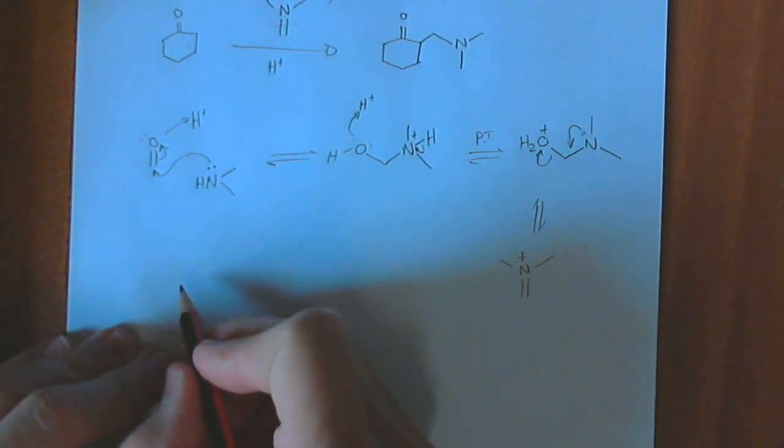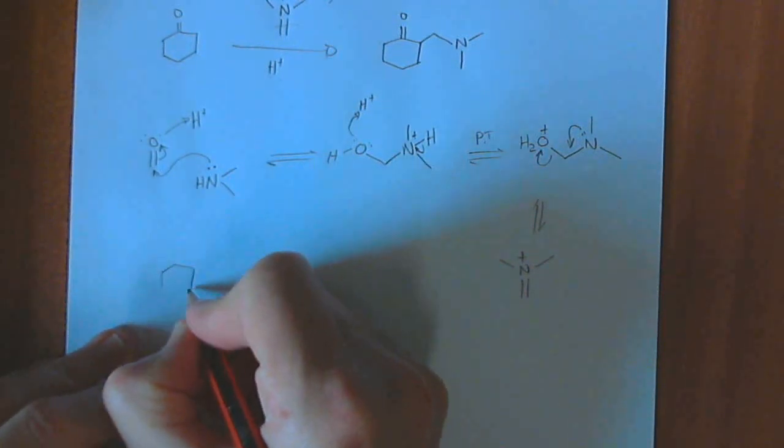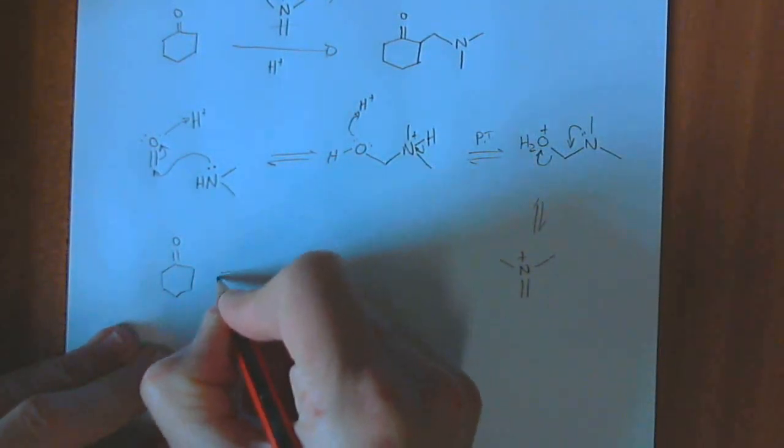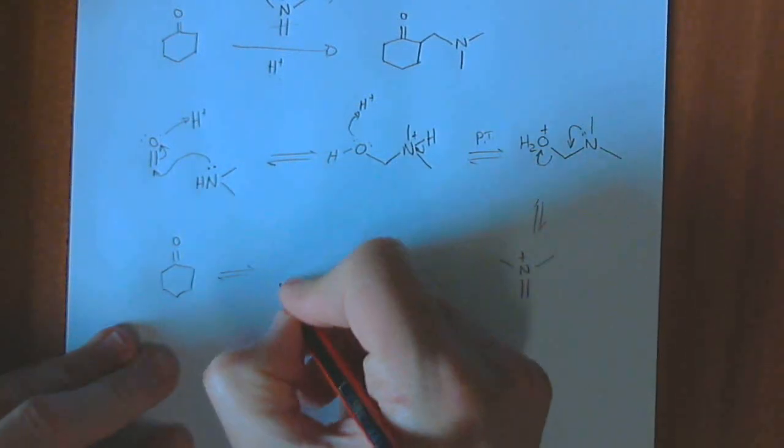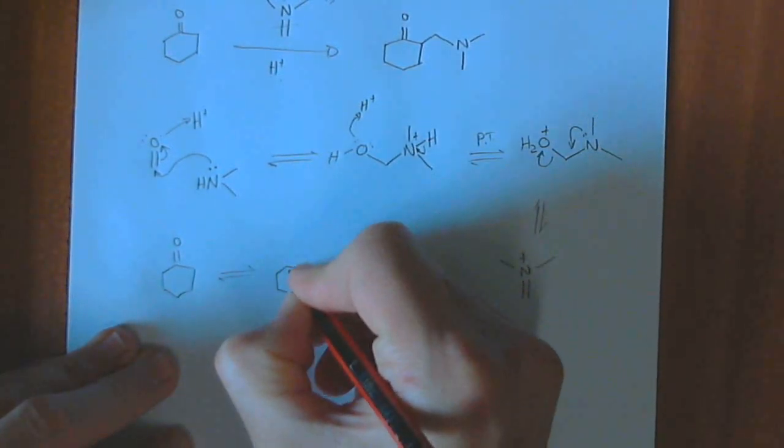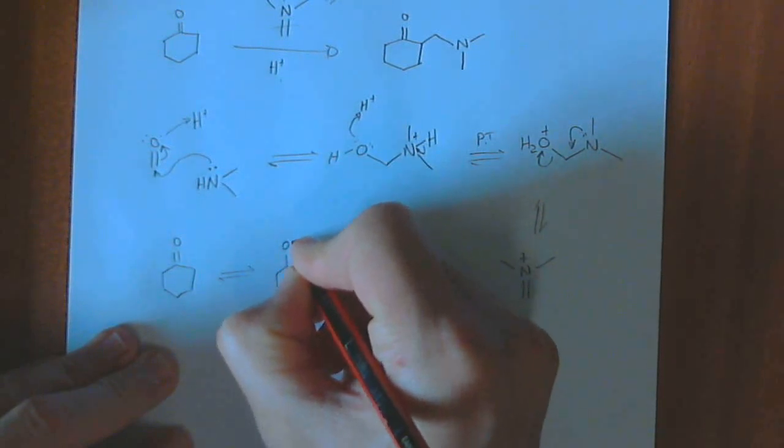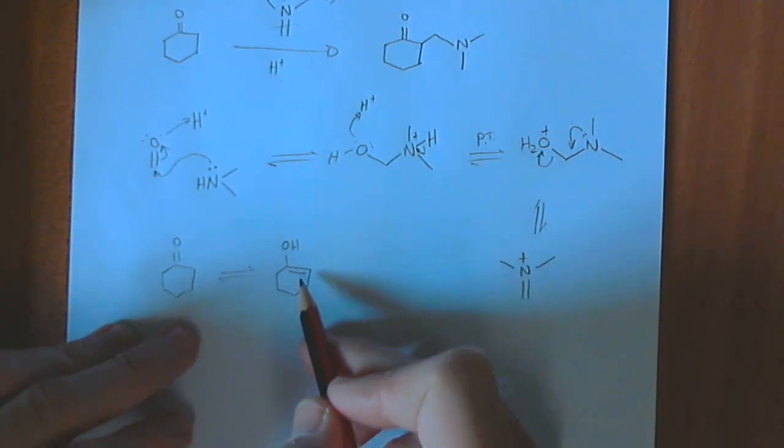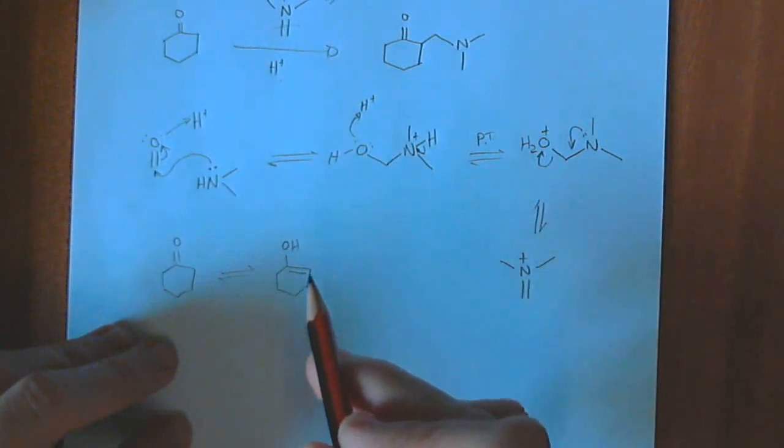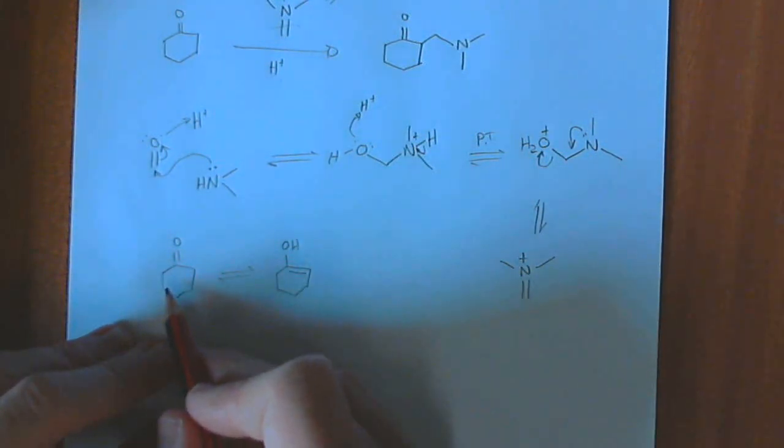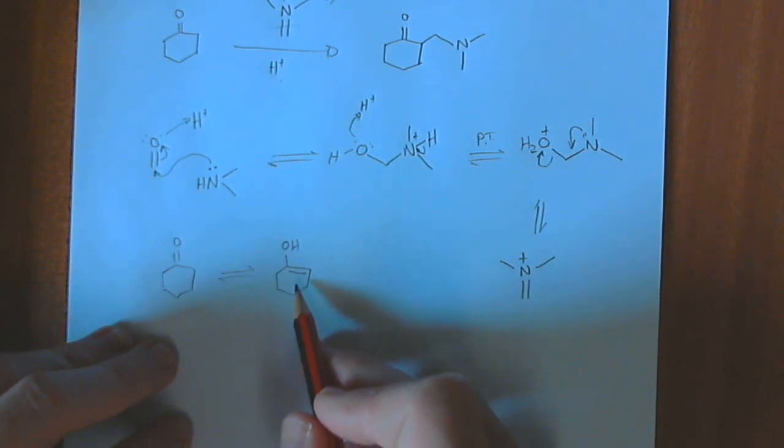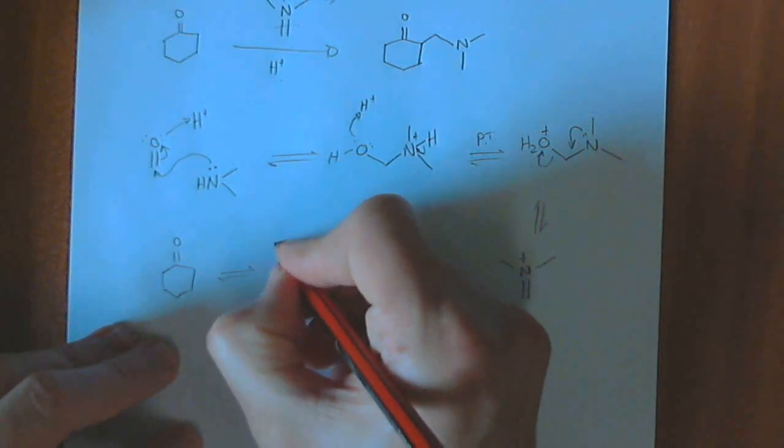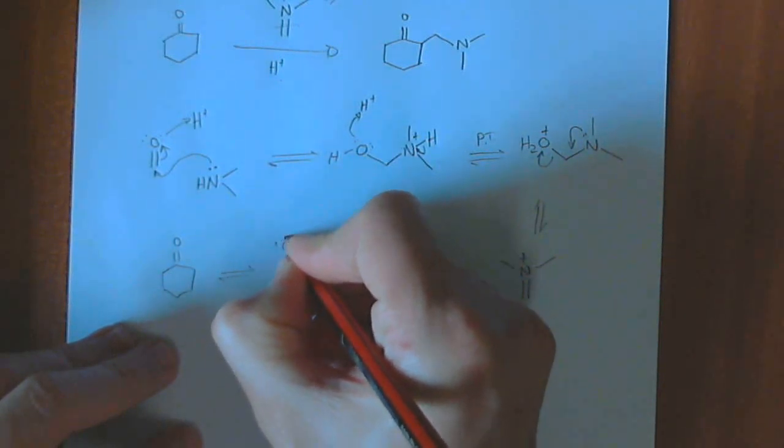At the same time, under acid conditions, we get our ketone. By tautomerization, we end up in the enol form. The enol is now our nucleophile. Remember, in terms of the equilibrium, not much of this is being formed. Equilibrium is lying towards the left-hand side, but we have enough of this. As it is formed, it's now a good nucleophile. We've got a great electrophile over there, and so these can react.